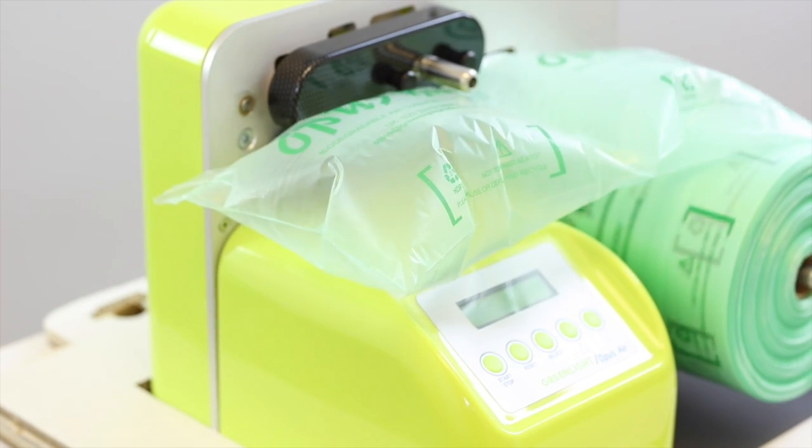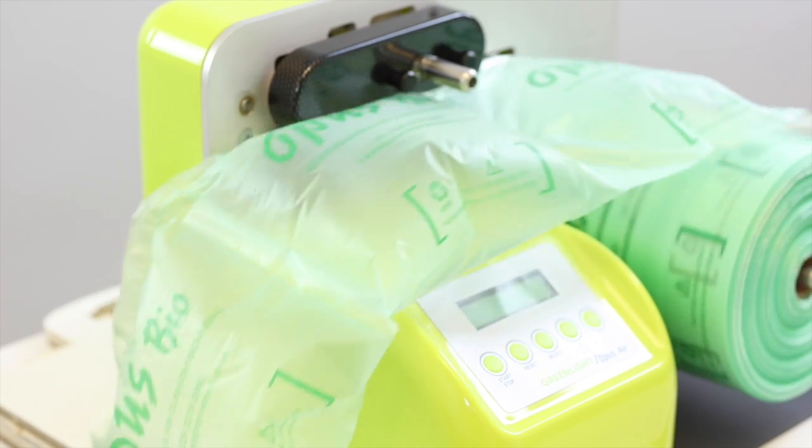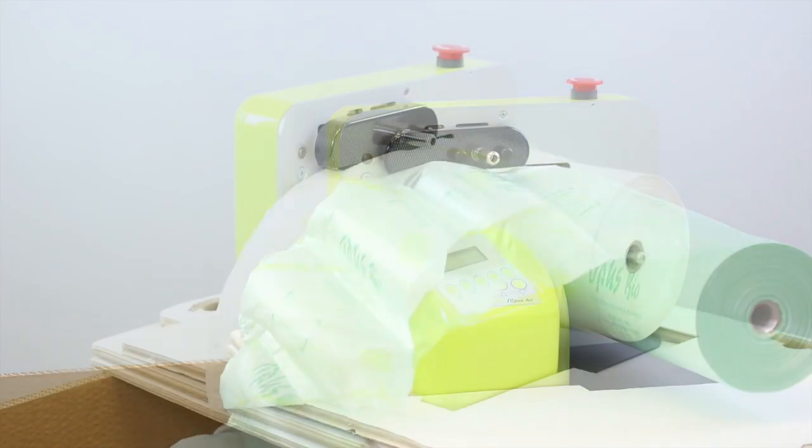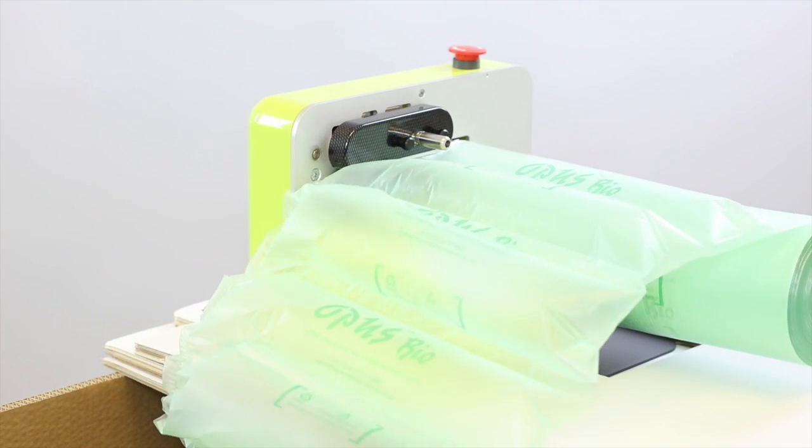The Opus control system ensures that the first cushion is sealed, meaning no waste bags on startup. The Opus operates at speeds of up to 18 meters or 55 feet per minute and can produce over 400 cubic feet or 11 cubic meters of air pillows per hour.